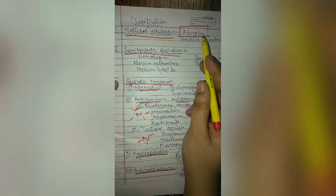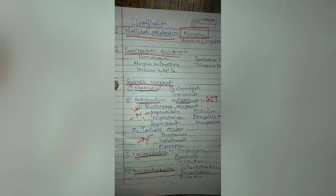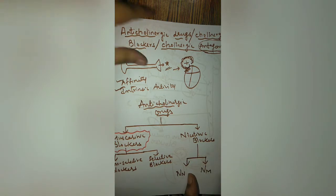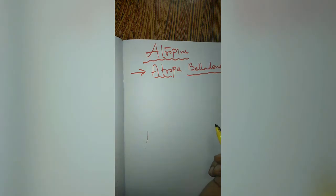We will start our discussion with atropine, since it is a prototype drug able to block all muscarinic receptors. Atropine is an anticholinergic drug and a natural alkaloid obtained from a plant known as Atropa belladonna.